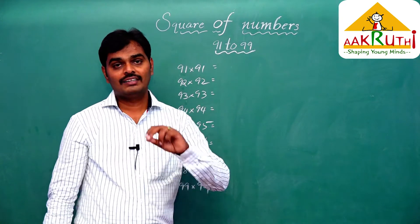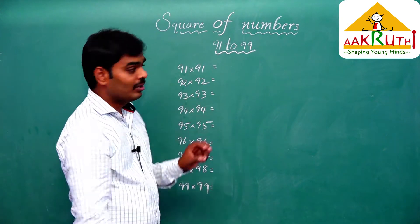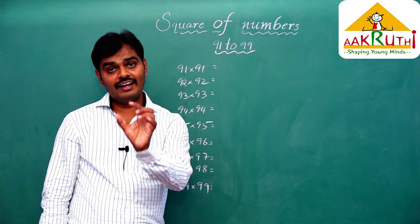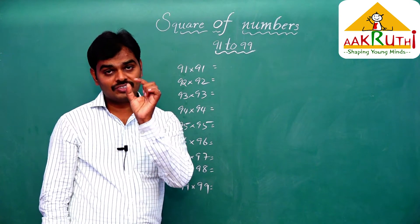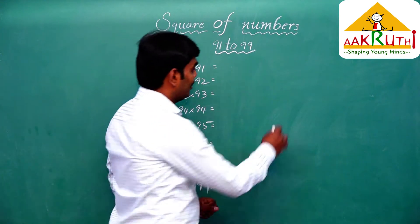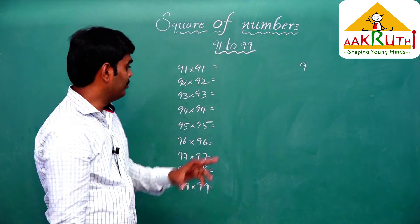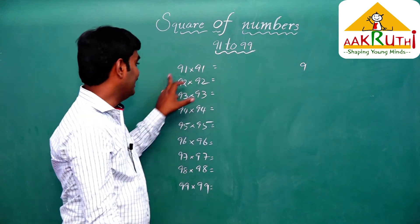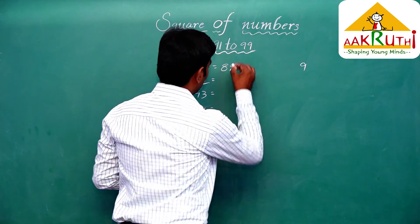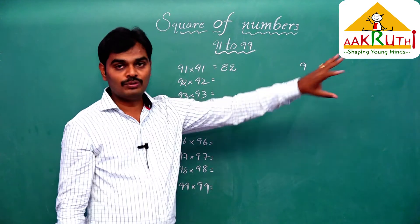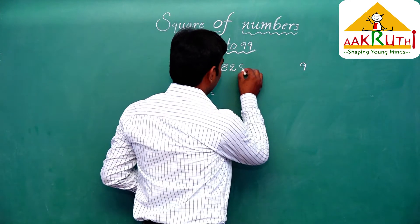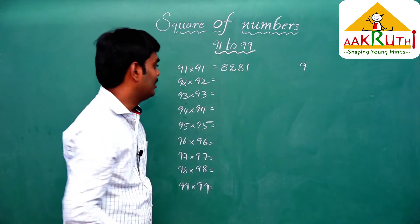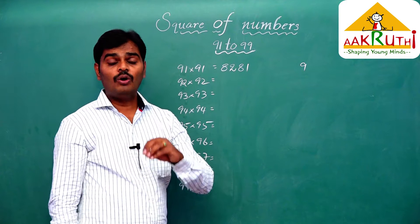In finding the square of 91, the first step is: 91 is 9 less than 100, so 91 = 100 minus 9. The first step is 91 minus 9, which equals 82. The second step is 9 squared, which is 81. So 91 squared equals 8281.